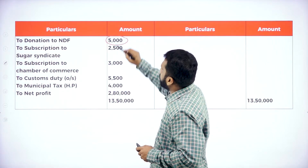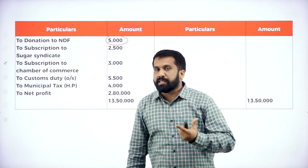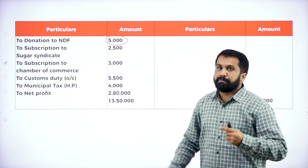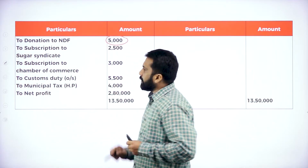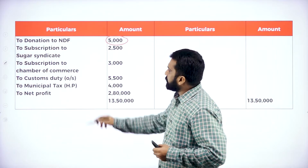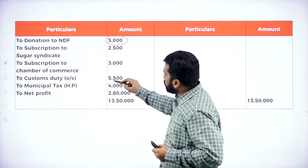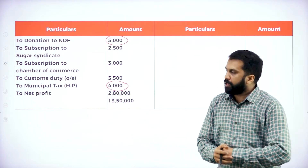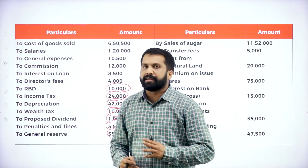Donation to NDF — take. Subscription for sugar — part of your business, because you are running a sugar industry. Whatever subscription paid is business related. Chamber of Commerce subscription — part of your business. Municipal tax — whatever you paid, you are supposed to take. These are the things we are supposed to consider as disallowed items.